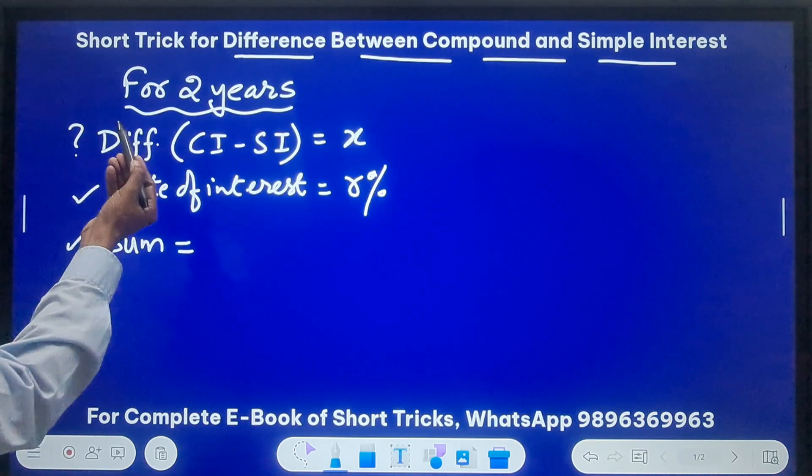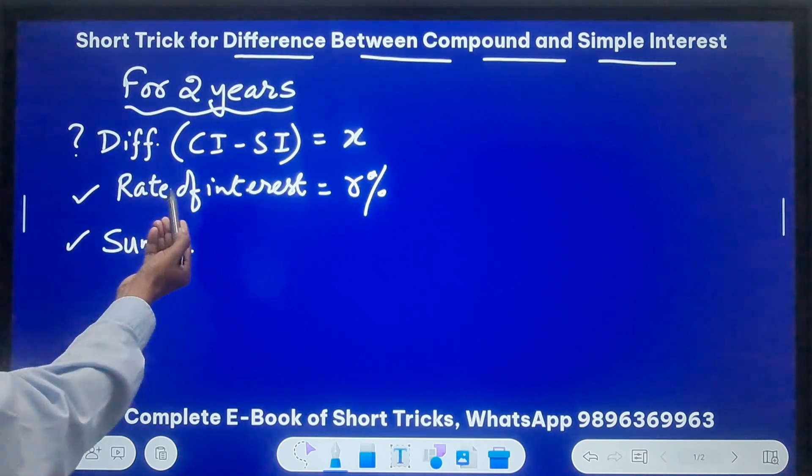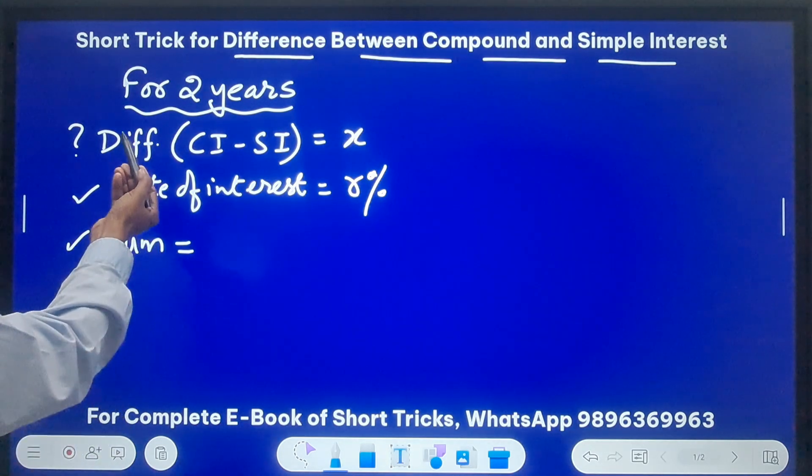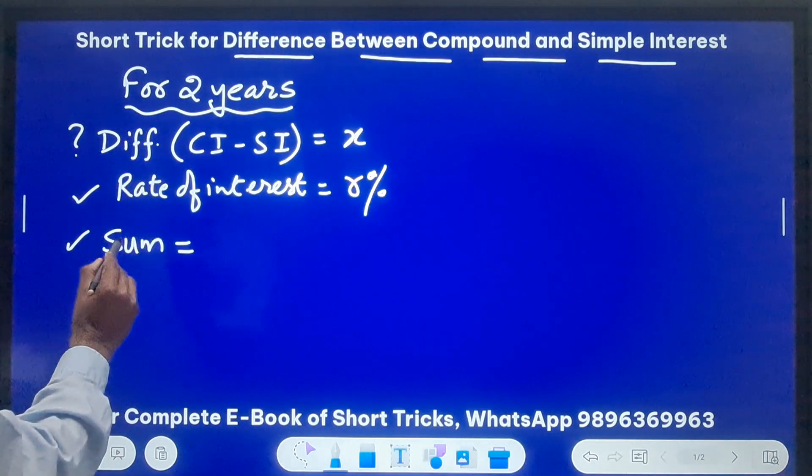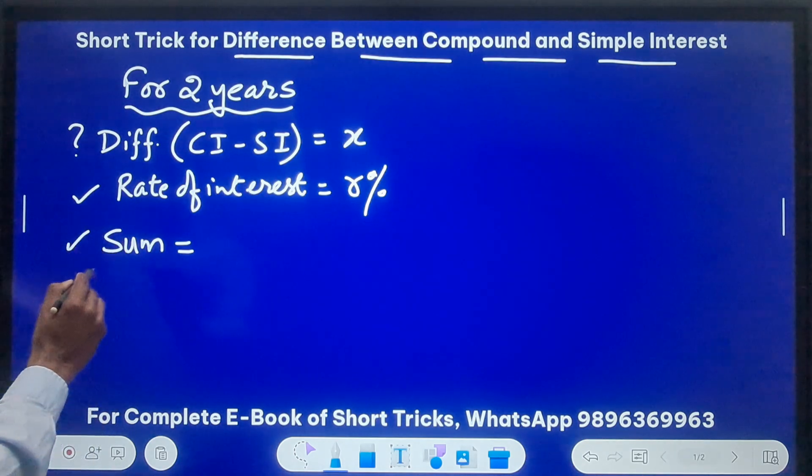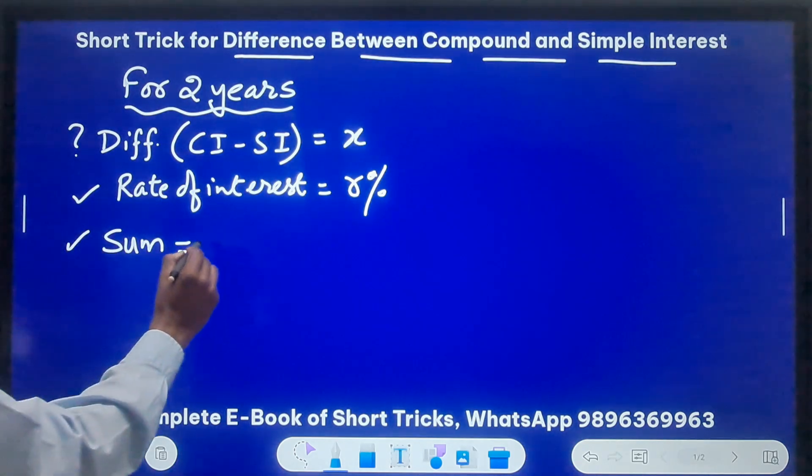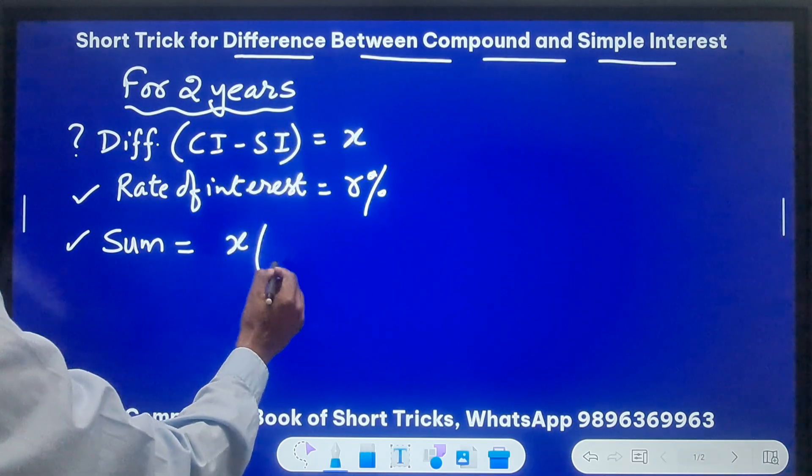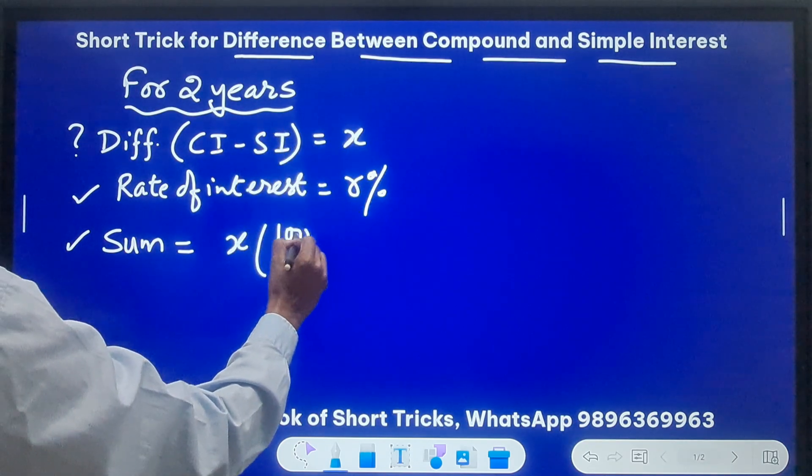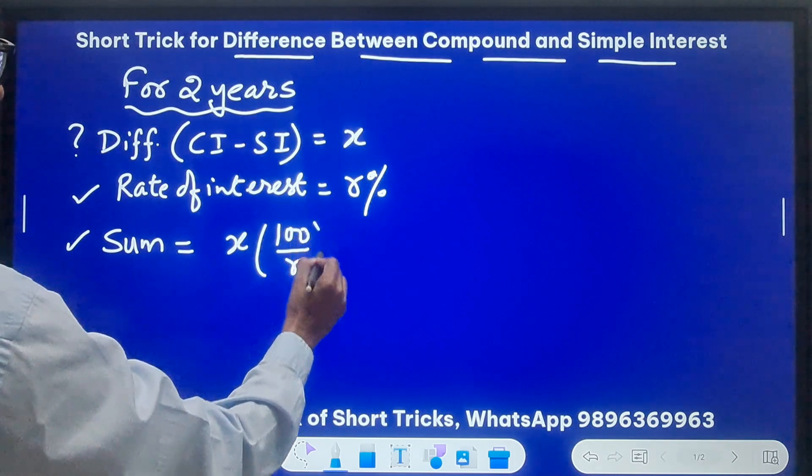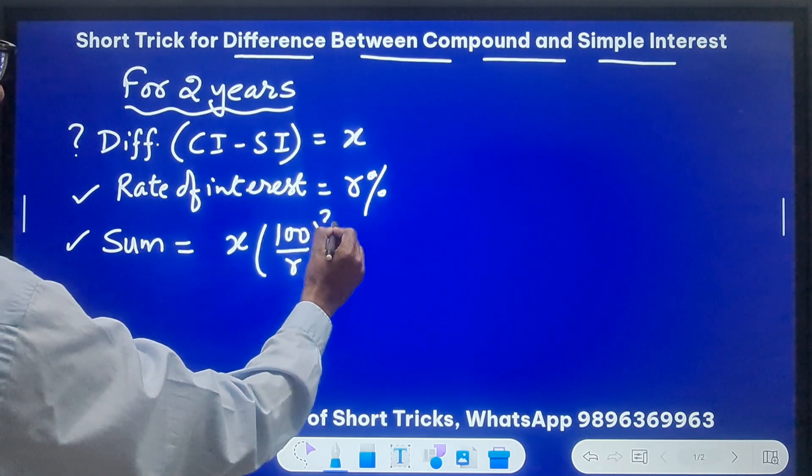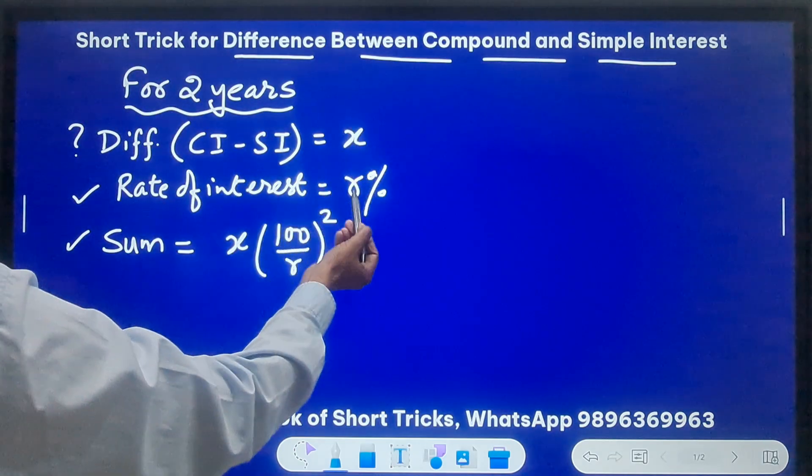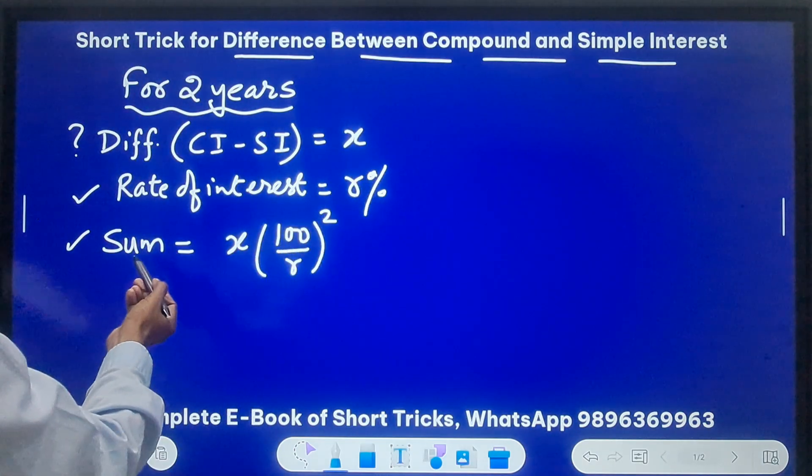In other words, suppose we have the sum which is given to us and the rate of interest is given to us and we have to find the difference. So it can be any way around. You may be given the difference, you may be given the rate and you may be asked to find the sum, or you may be given the rate and the sum and you may be asked to find the difference. So you can find the sum directly by using a particular relationship and that is X, which is the difference between CI and SI, times we have 100 upon the rate of interest, and you have to take the square of this. This will give you the principal amount directly. Just put X and R here and you will have the sum.